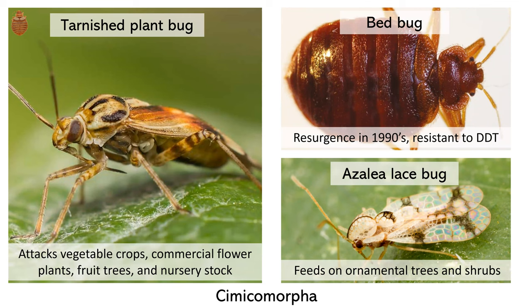I don't have to convince everyone here how important it is to understand the relationships within Cimicomorpha. There are a large number of pest species within Cimicomorphins, such as the tarnished plant bug, which attacks vegetable crops, commercial flower plants, fruit trees, and nursery stock — that's a Miridae. And the azalea lace bug, a tingid that feeds on ornamental trees and shrubs.